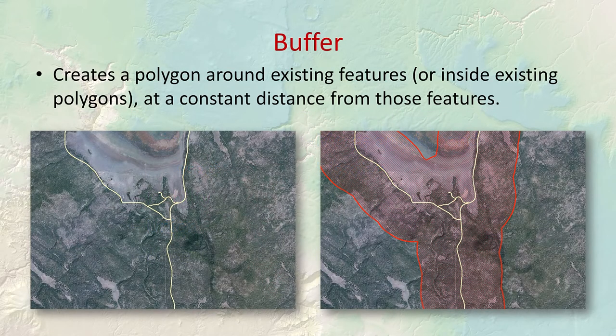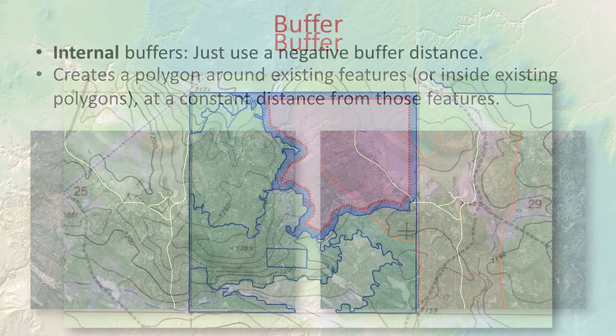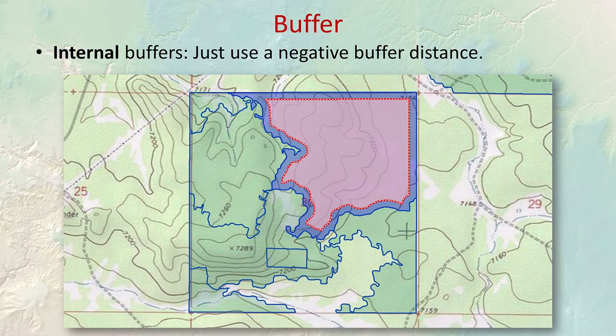The buffer tool creates a polygon around existing features — these can be points, lines, or polygons. You can even build a buffer inside polygons using a negative buffer distance, though internal buffers only work on polygons since there's no inside to a point or polyline.